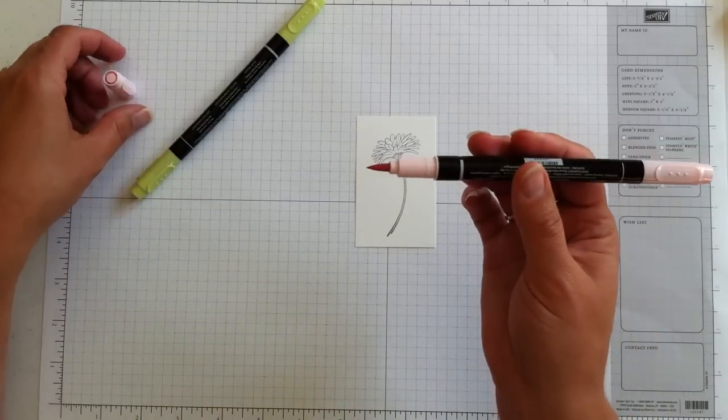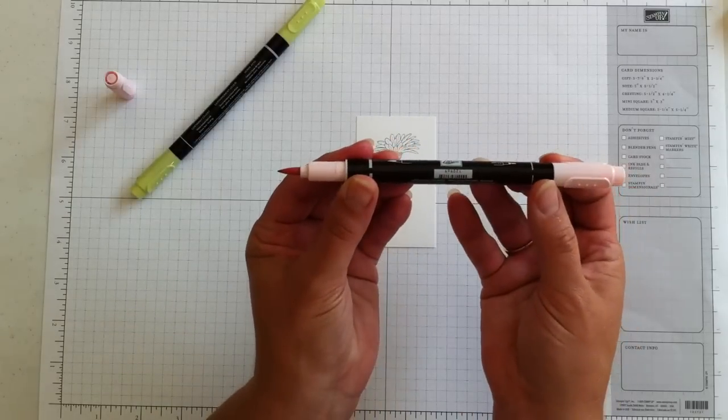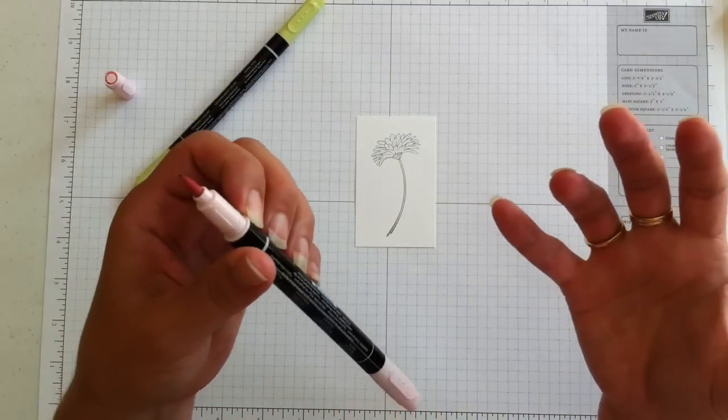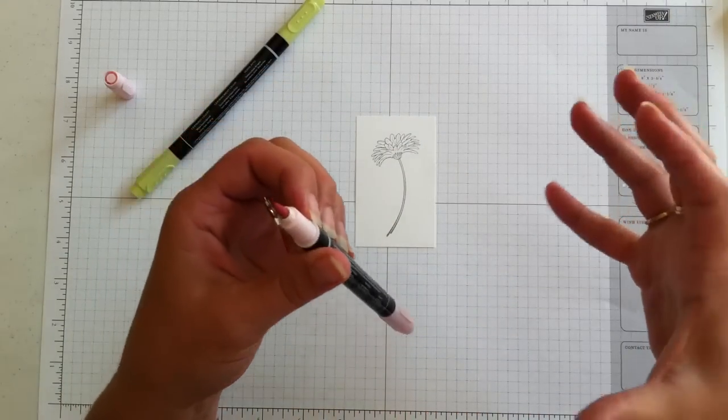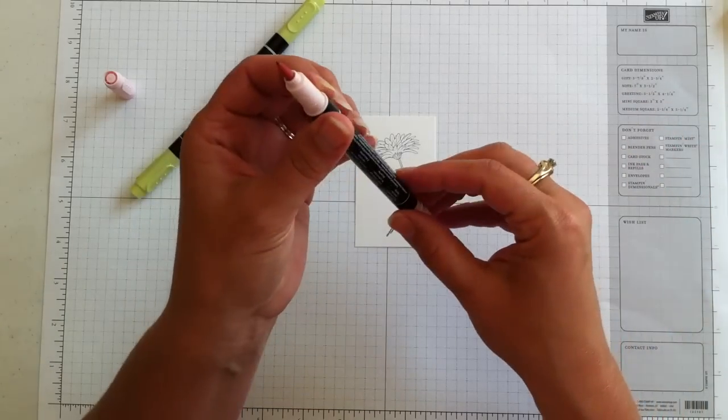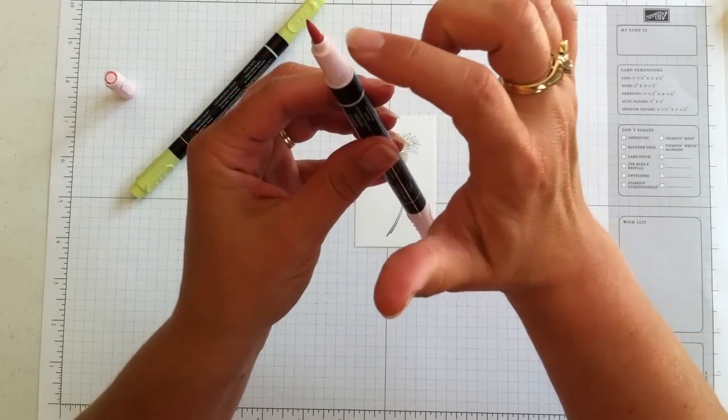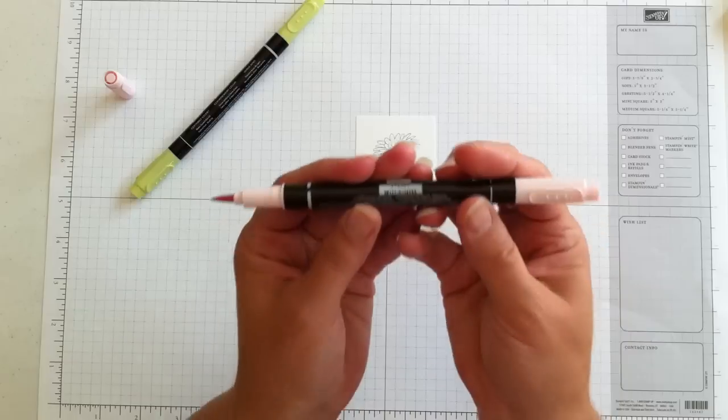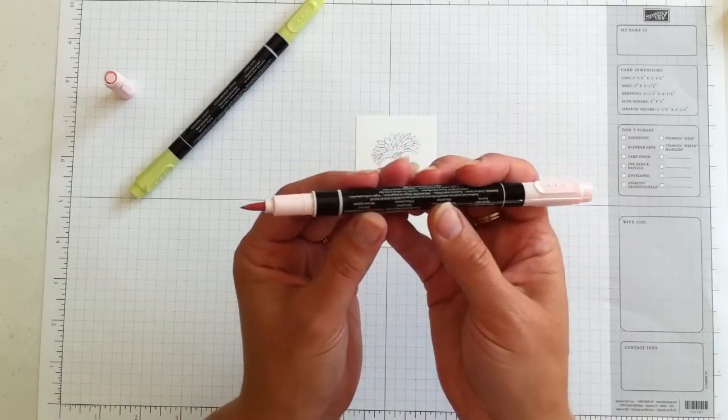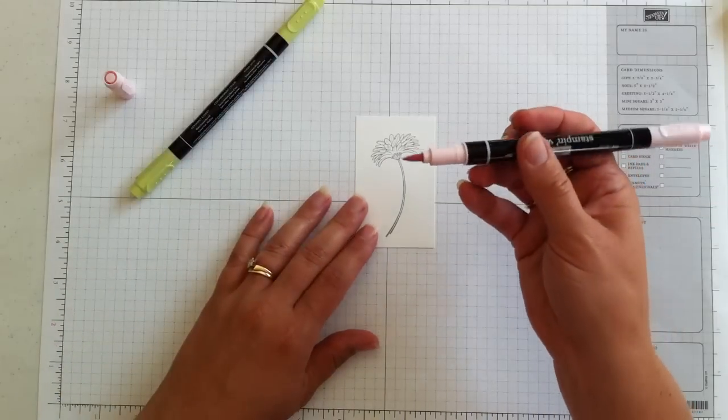And anything that's dual tipped like this you want to store horizontally. If you store it up like this, a lot of times you see people put their markers and things in a cup or some cute little container like that. But what's going to happen is the end that's up will dry out. So you want to keep them more in a drawer or in some type of case that can lay horizontal.